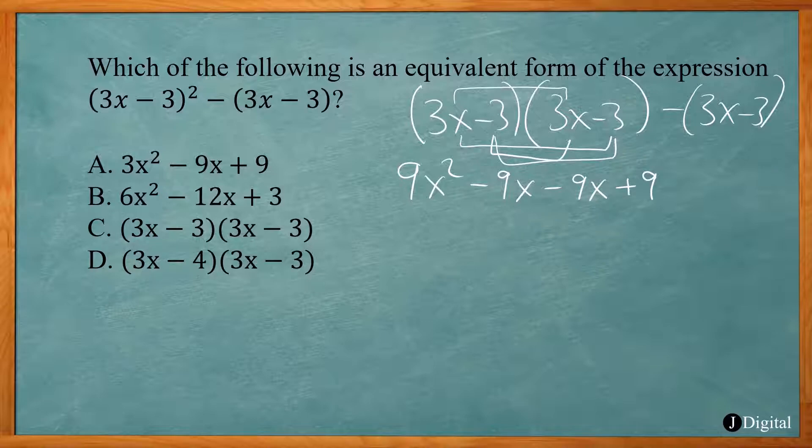And then here you would distribute the negative. So that gives you -3x and then +3. You combine like terms, gives me 9x². I have -9x, -9x, -3x. 18 and 3 give me 21, so -21x. And then the 9 plus 3 gives me 12.